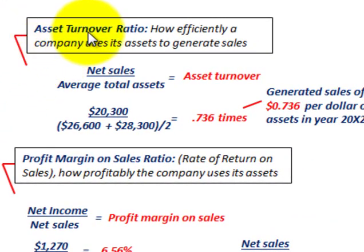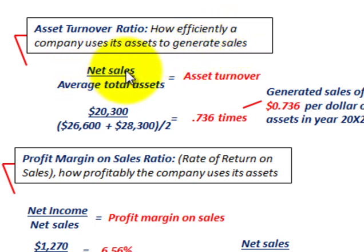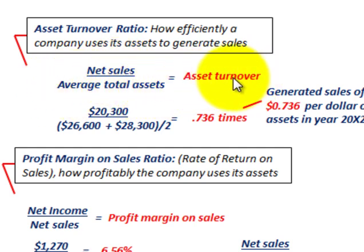For our asset turnover ratio, this measures how efficiently the company uses its assets to generate sales. The asset turnover ratio is simply taking the net sales for the year and dividing by the average total assets, and that equals our asset turnover.